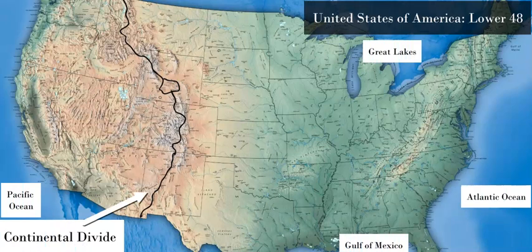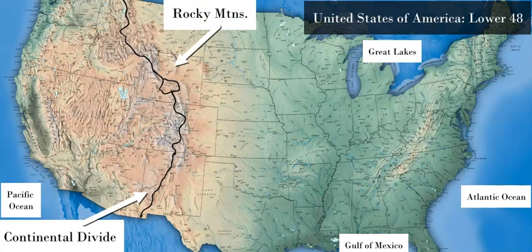The United States has a fantastic example demonstrating the awe-inspiring beauty of this natural divide, which in America they call the Continental Divide. This is a geographic line or divide along the lower 48, which also extends into Mexico, Canada, and Alaska. In the lower 48 of the United States, this divide runs mostly through the Rocky Mountains.